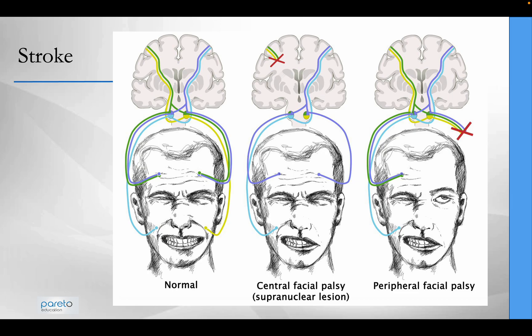An upper motor neuron lesion — in other words, a stroke — is slightly different. If the stroke is on the right side, this patient will only have weakness on the left lower aspect of the face. This is because, as well as having innervation that affects the upper aspect of the face from the affected side, he also has innervation from the normal or opposite cerebral hemisphere. In other words, he or she will be able to raise their eyebrow when asked, if the patient has had a pure stroke.